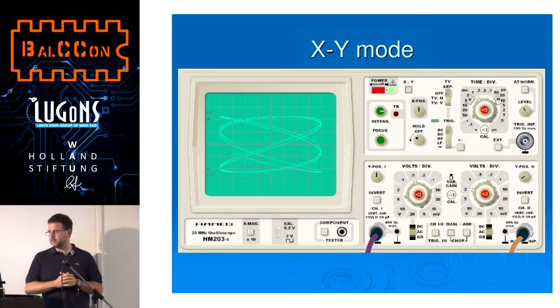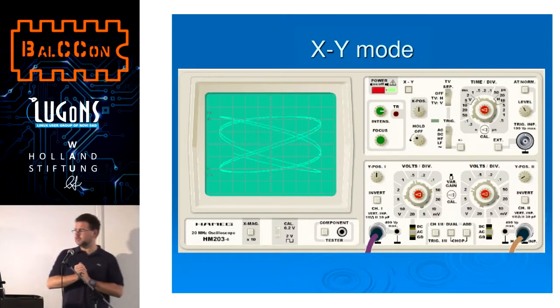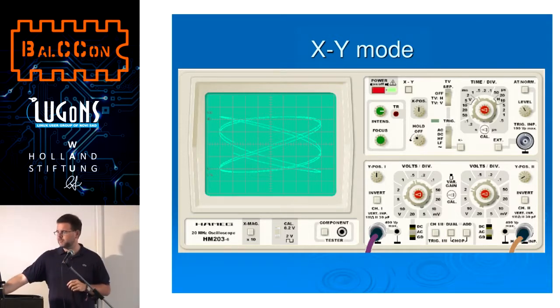Here's a short preview of these Lissajous figures: you get a perfect circle for a 1-to-1 frequency ratio, and this type of figure in XY mode for 1-to-2, 1-to-3, and 1-to-4 frequency ratios.